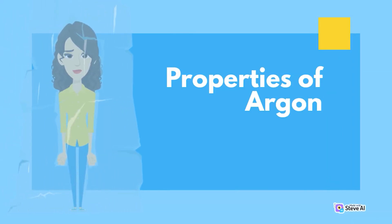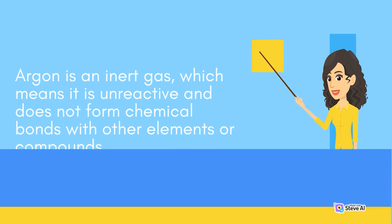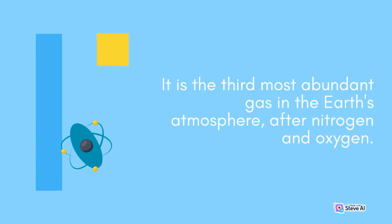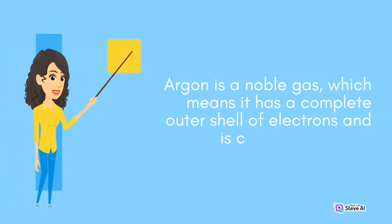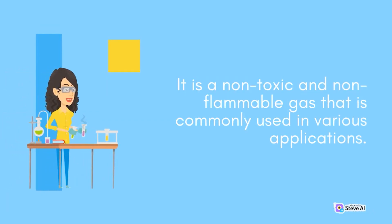Properties of Argon. Argon is an inert gas, which means it is unreactive and does not form chemical bonds with other elements or compounds. It is the third most abundant gas in the Earth's atmosphere, after nitrogen and oxygen. Argon is a noble gas, which means it has a complete outer shell of electrons and is chemically stable. It is a non-toxic and non-flammable gas that is commonly used in various applications.